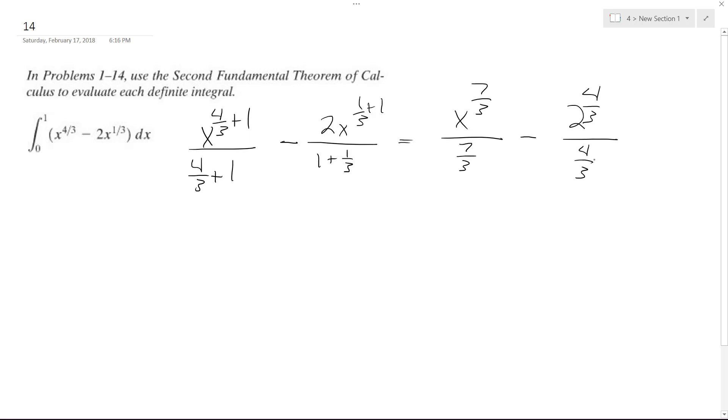Yeah. So this ultimately ends up becoming three over seven X to the seven thirds minus six over four. So three halves, put the X in there, X to the four thirds. Okay,